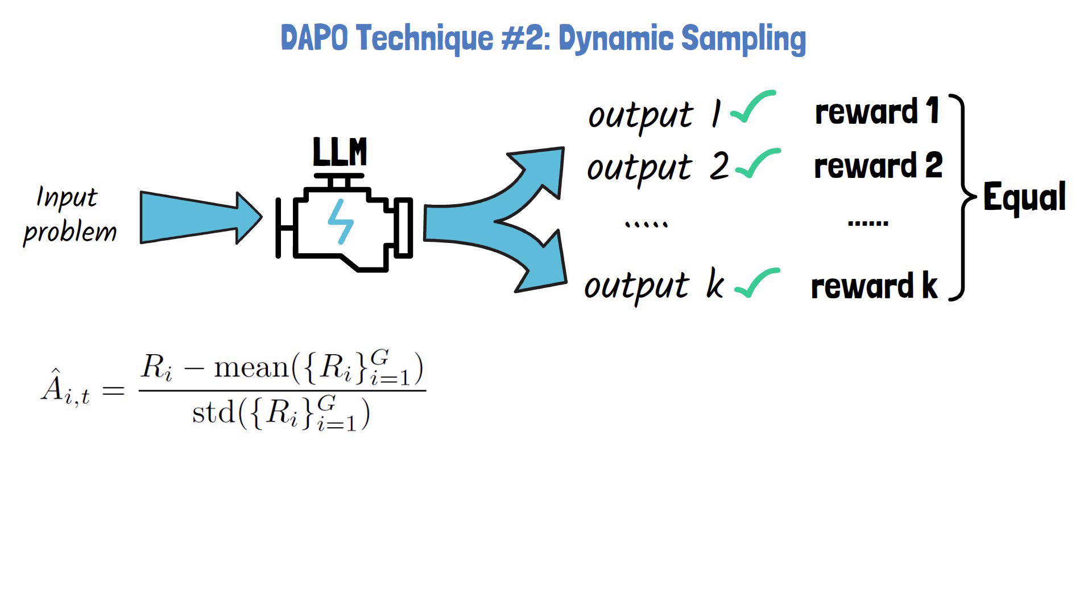The advantage of each response is calculated relative to the other sampled responses. We see the advantage normalizes the reward by subtracting the average reward, causing the advantage to be zero in this case. Because if all rewards are equal, then the average is equal to the reward itself. This removes the training signal for such a sample.